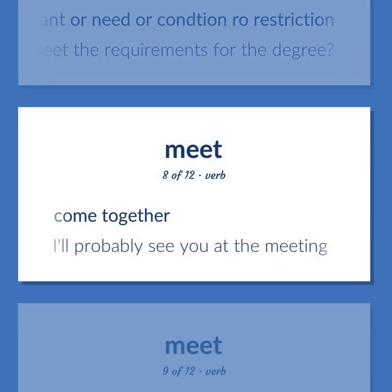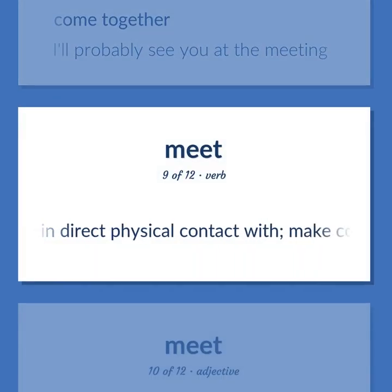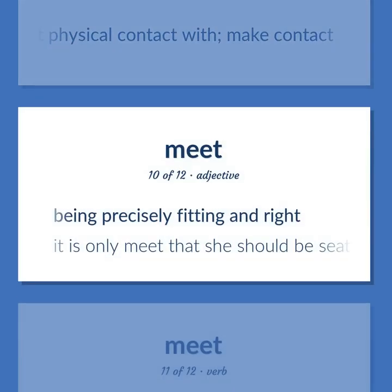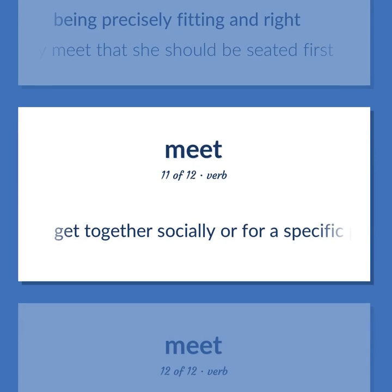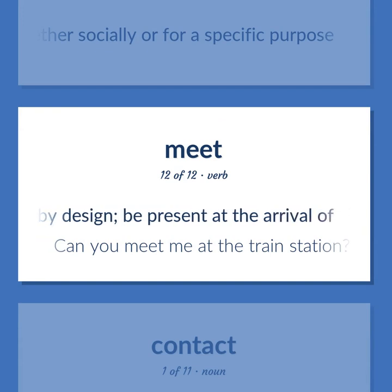MEET: Come together. 'I'll probably see you at the meeting.' Be in direct physical contact with; make contact. Being precisely fitting and right. 'It is only meet that she should be seated first.' Get together socially or for a specific purpose. Meet by design; be present at the arrival of. 'Can you meet me at the train station?'